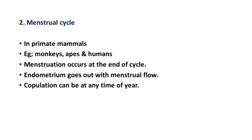The endometrium is an epithelial lining. In the menstrual cycle of primates, during the menstruation period, this layer of cells is removed and blood is shed. That is why the menstrual cycle is important — the endometrium goes out with the menstrual flow. Copulation can occur at any time of the year.